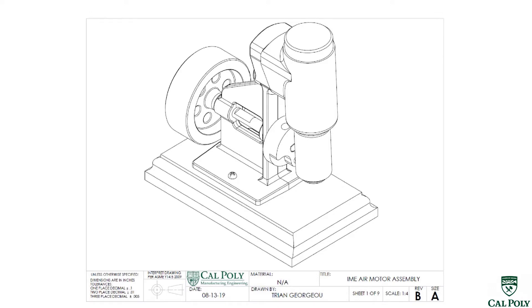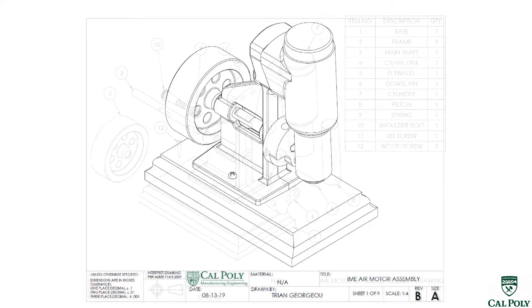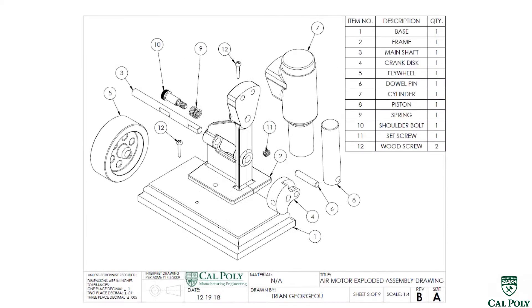In this video we're going to go ahead and virtually assemble the air motor and determine all the different types of fits and why they're there in this assembly. We're going to first start off looking at the assembly drawing right here. The assembly drawing shows us all the air motor parts in the exploded view that go together. It takes 13 parts in total in order to go ahead and manufacture an air motor.